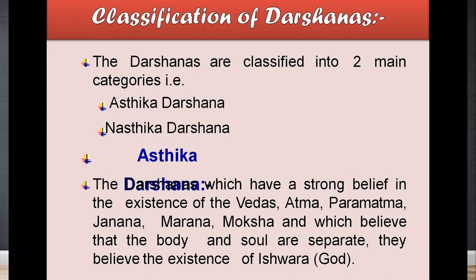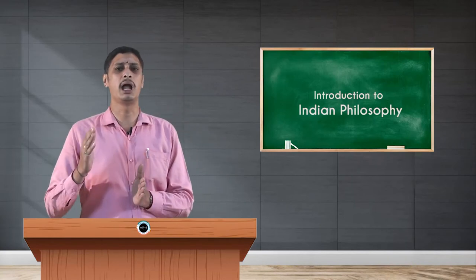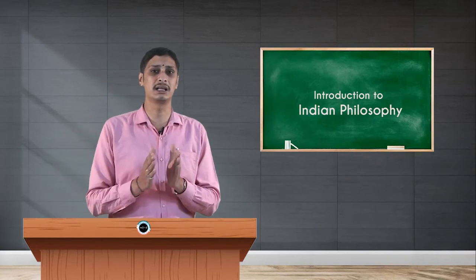Asthika refers to one who believes in God and the existence of Vedas and their reliable sources. Nasthika refers to one who does not accept the Vedas and accepts God through their own philosophy. Gautama Buddha founded Buddhism, and along with Charvaka and Jainism, these three — Jainism, Charvaka, and Buddhism — are the Nasthika Darsanas.